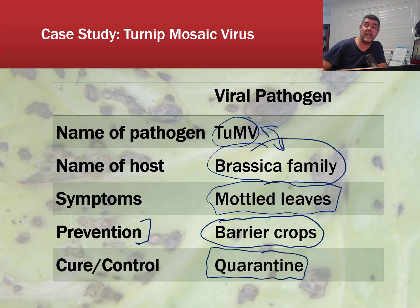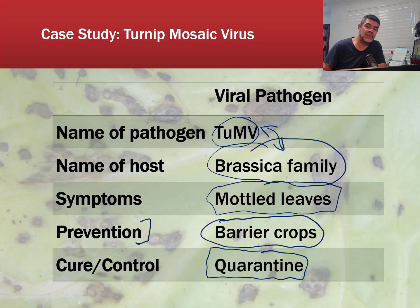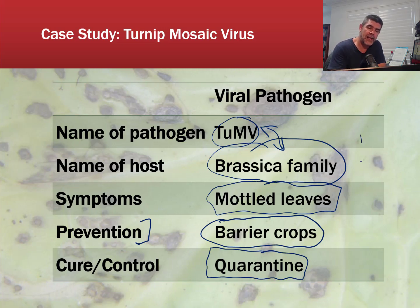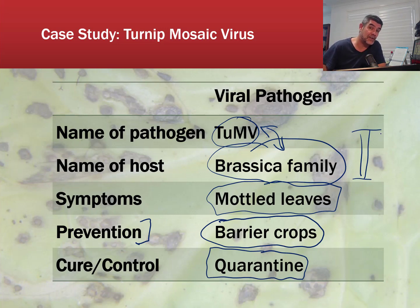Quarantine can happen on a large scale, but it can also happen on an individual scale. This particular example is a mosaic virus that infects plants like turnips and other members of the brassica family. This is something you might want to look at in more detail, but there are plenty of other examples. As mentioned previously, you may want to try and find an example that's a little bit more quintessentially Australian than some of these introduced vegetable species.